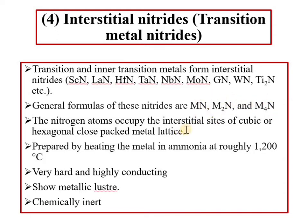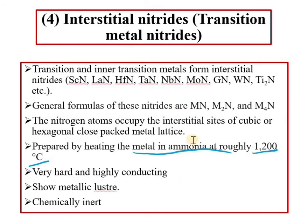Interstitial nitrides can be prepared by reacting the metal with ammonia at roughly 1200 degrees centigrade. These materials are very hard, highly conducting, and show metallic luster. They are also chemically inert. These are the distinguishing properties of interstitial nitrides.